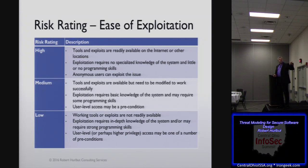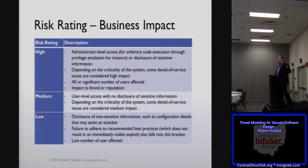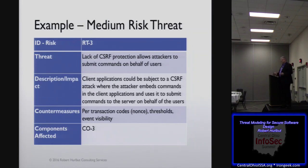The ease of exploitation: if anonymous users can exploit the issue, it's high. If you need to know things about the system, working tools and so on, it's probably medium. If it's hard to do, it's low. Business impact: if all users are impacted, that's pretty high; if a significantly low number of users are impacted or the possibility of harm is very low, it's a low. You put those together and determine your risk level. This is an example — a medium risk threat: CSRF. Here's a description of it — we need transaction codes, thresholds, event visibility, and so on — and identifying the components that are affected. So that's our threat model entry.